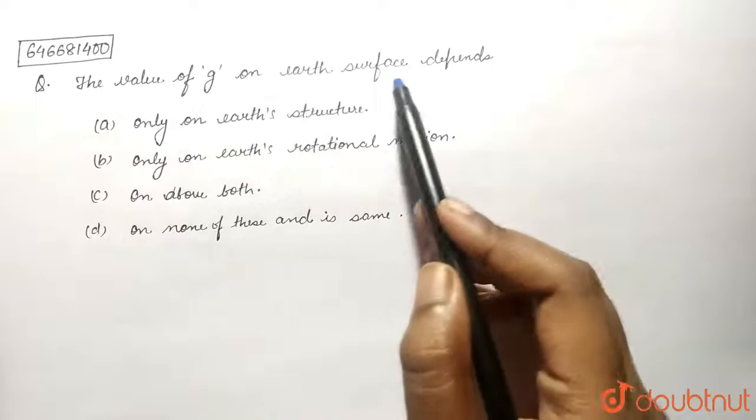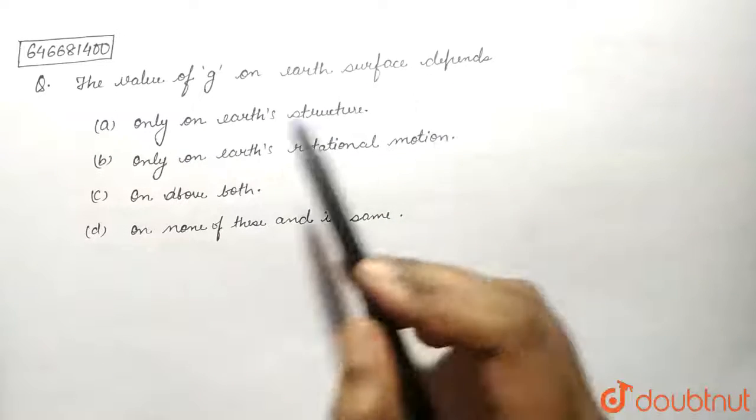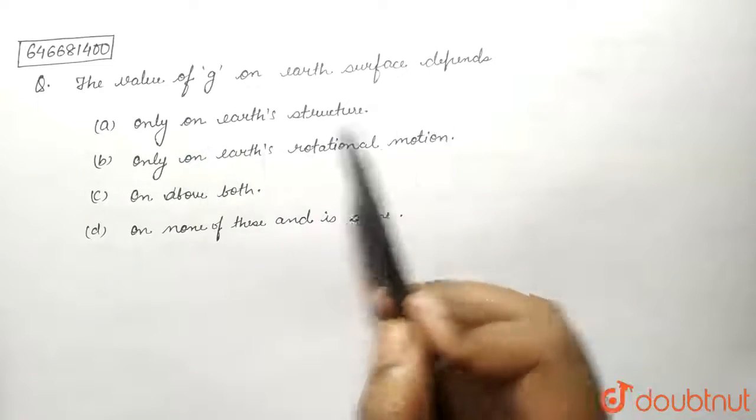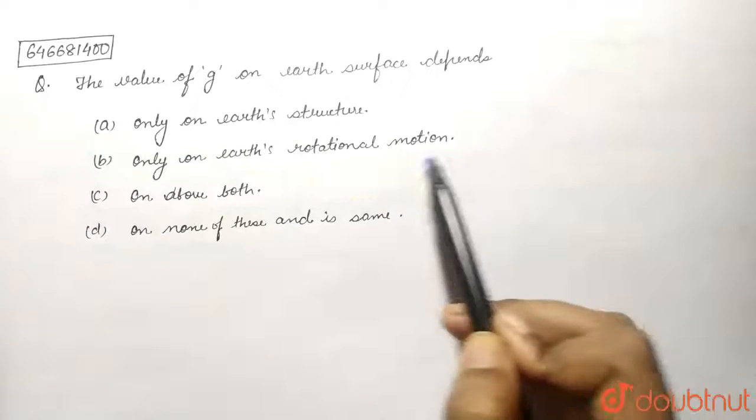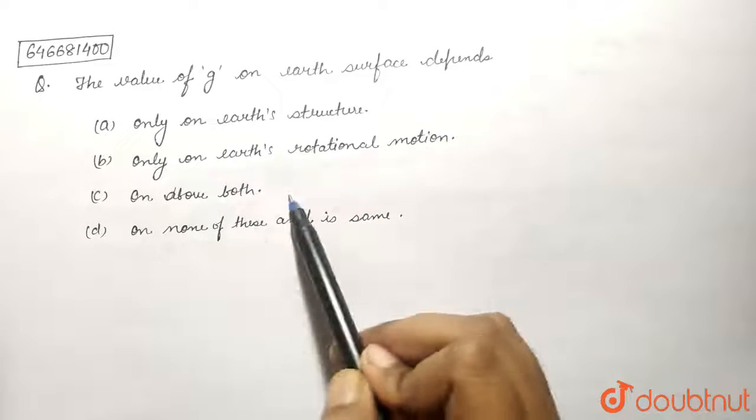The value of g on Earth's surface depends: only on Earth's structure, only on Earth's rotational motion, on both, or none of these and is same everywhere.